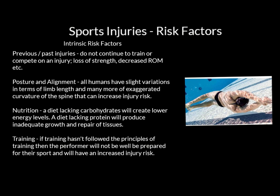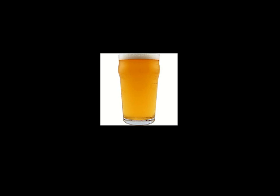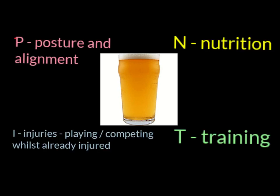Finally, training — training should follow the principles of training. If it does, I am adequately prepared for my sporting situation. If I do not follow the principles of training, I'm not going to be fit for my activity and therefore I'll increase my risk of getting injured. A way to remember the intrinsic risk factors is the mnemonic PINT — P-I-N-T — giving you four factors to talk about and expand upon.